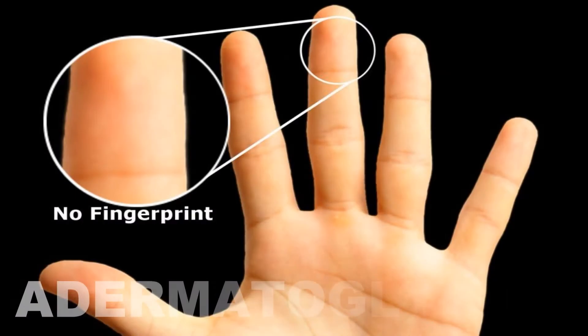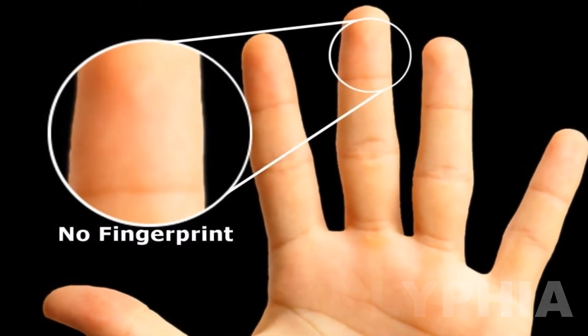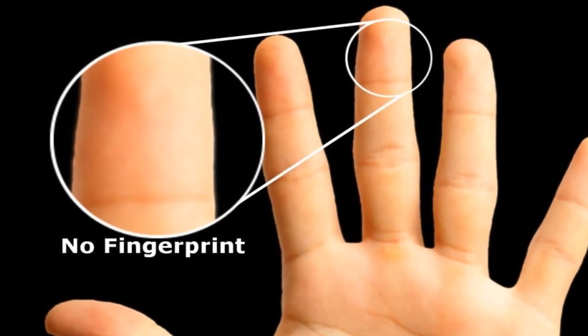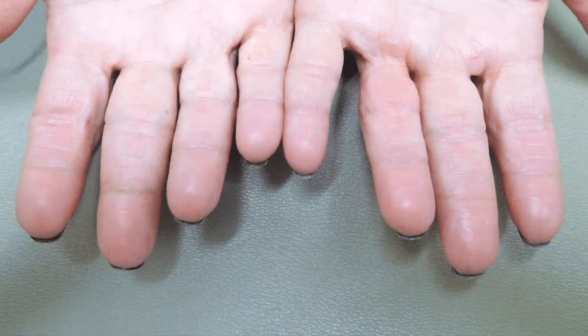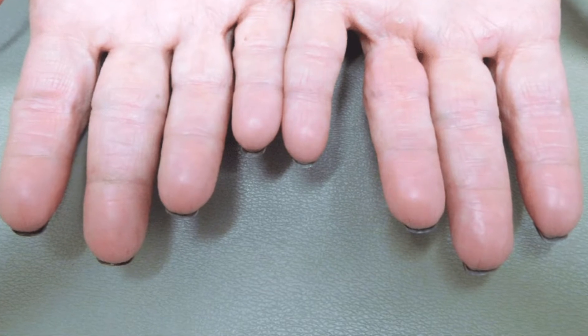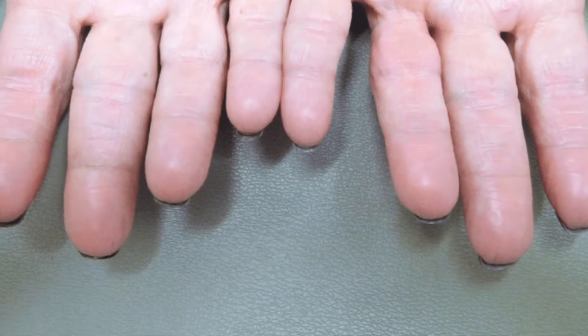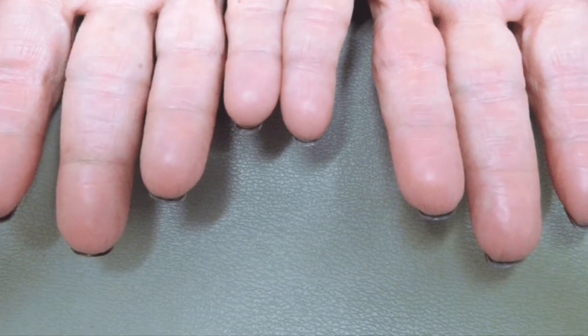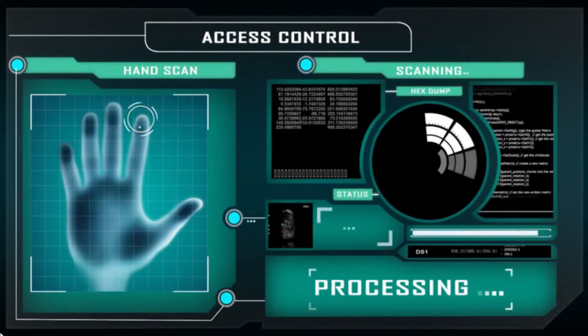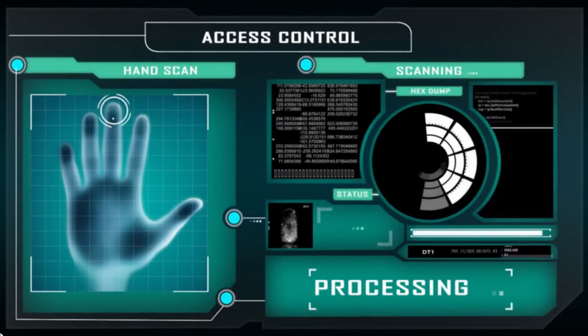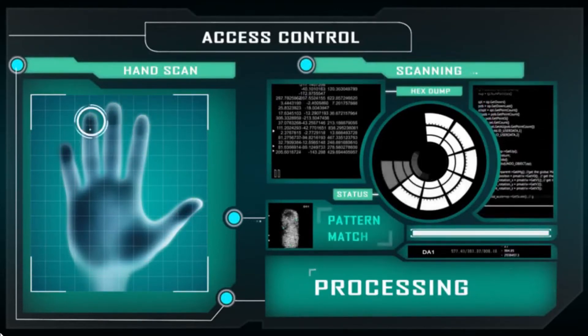Adermatoglyphia is a genetic disorder of people born without fingerprints. This disorder is extremely rare and causes no problems apart from occasional difficulties with authorities. In 2007, dermatologist Peter Itin was contacted by a Swiss woman with an unusual quandary.